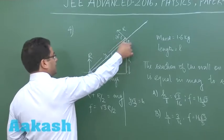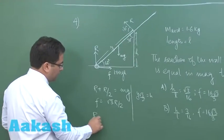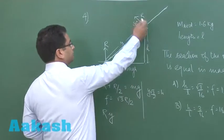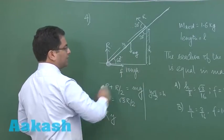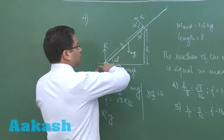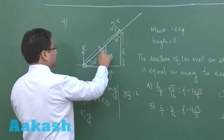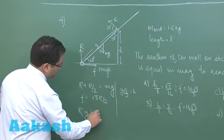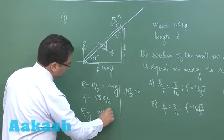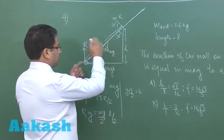The anticlockwise torque would be R multiplied by H, and Mg. The total length is L and this is 60, so this is 30. It would be equals to Mg sin 30 into the distance which is L by 2.